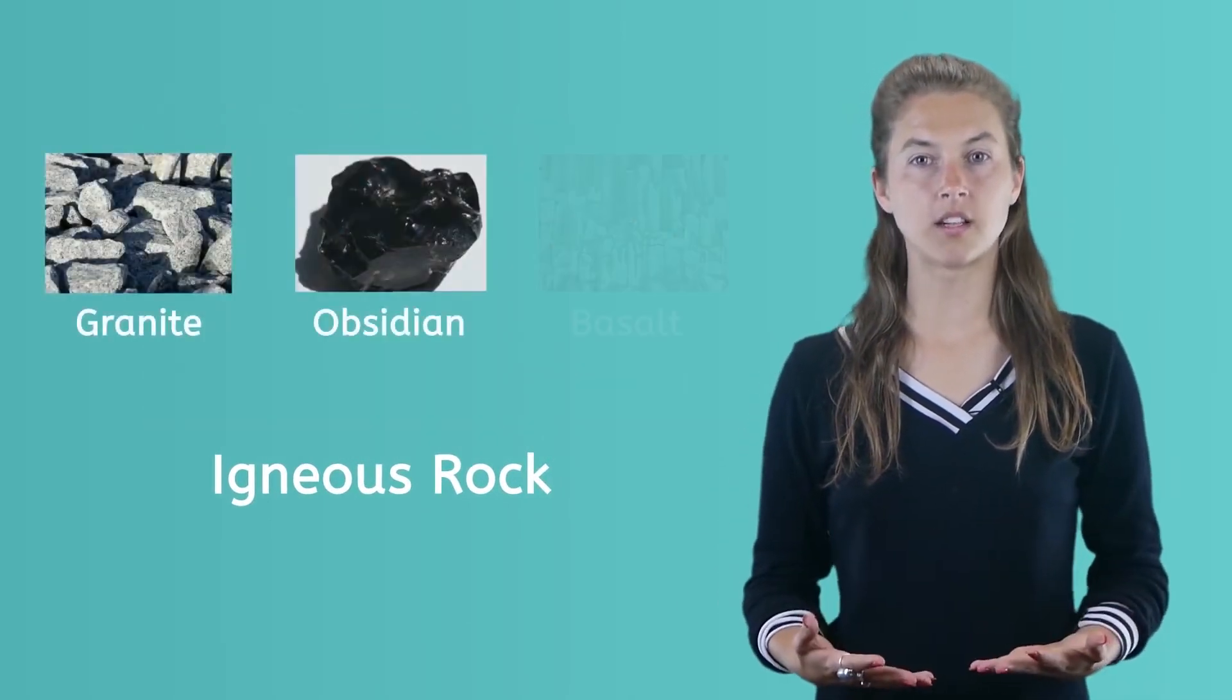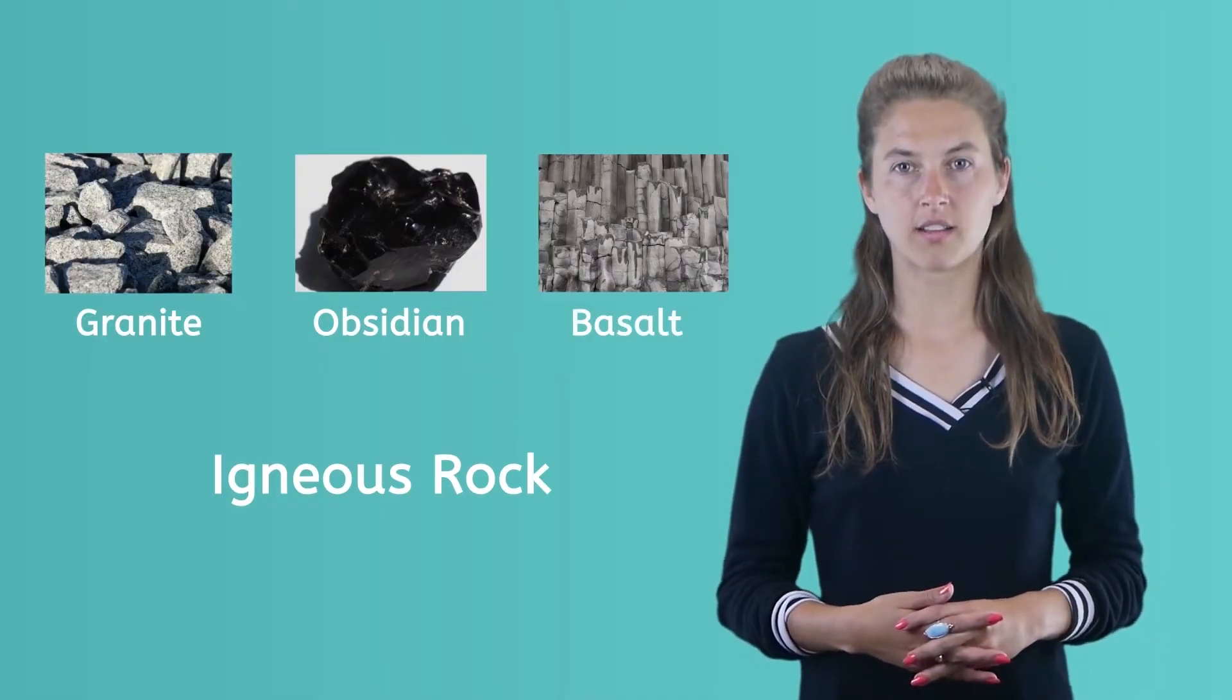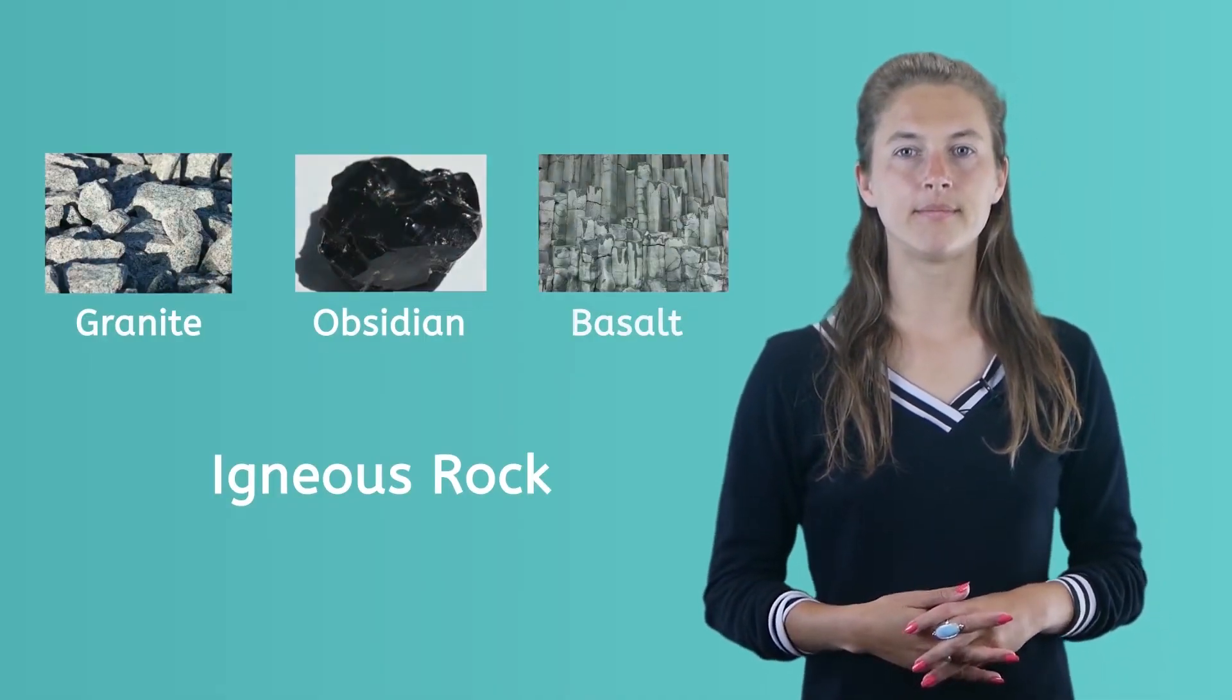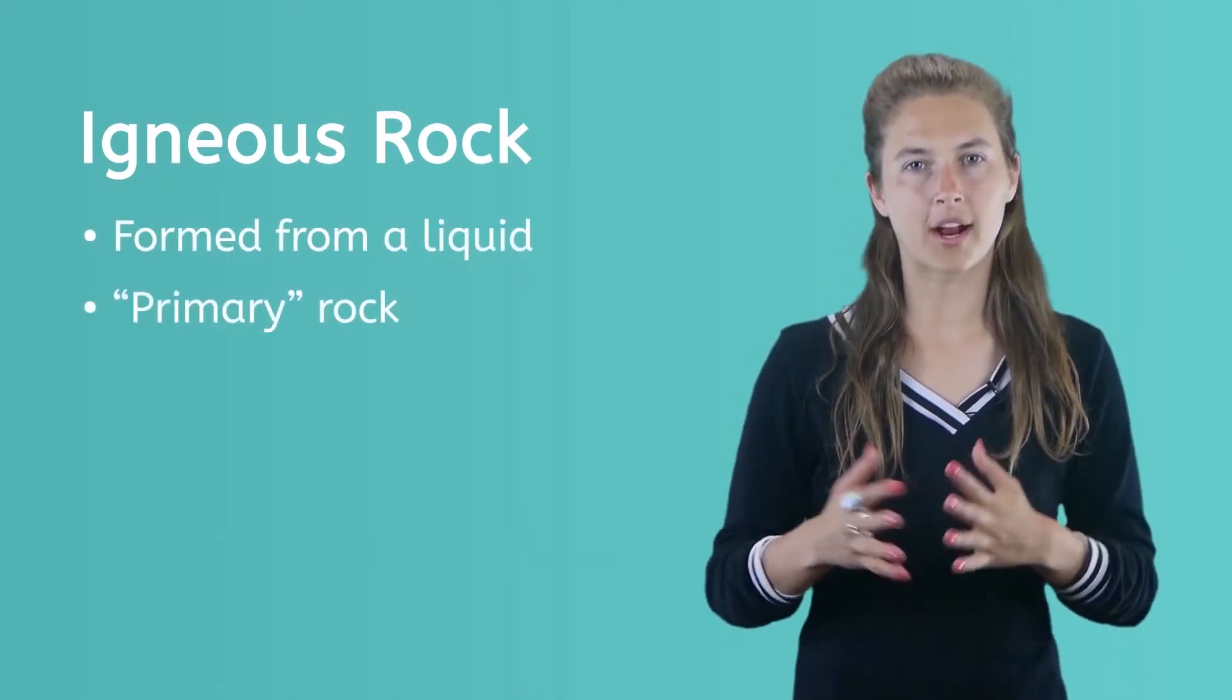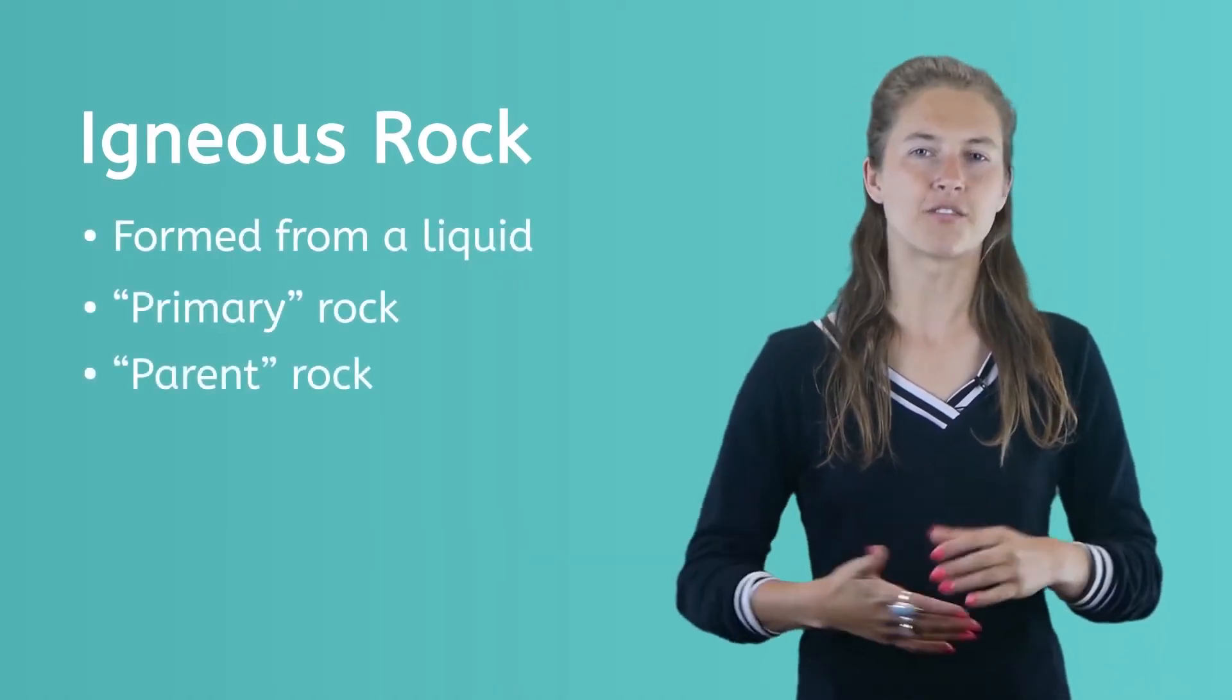Granite, obsidian, and basalt are examples of igneous rock. Because igneous rock is formed from a liquid, it is considered to be a primary rock or the parent rock.